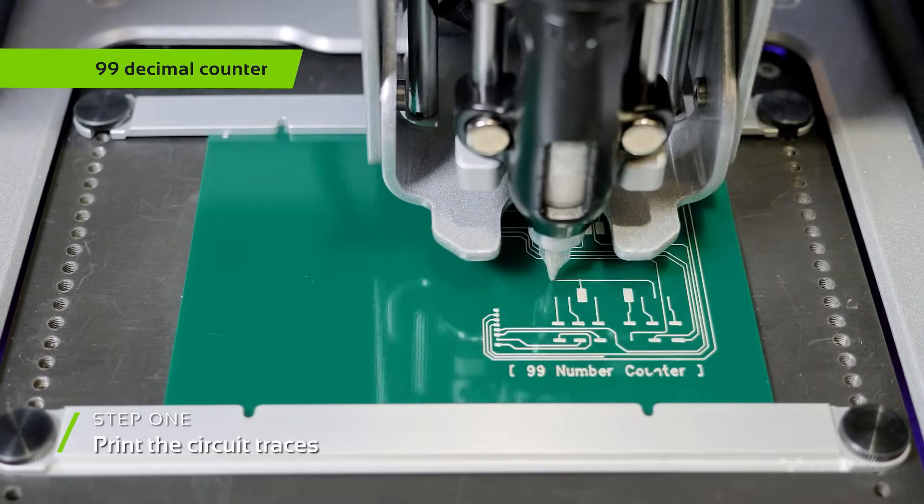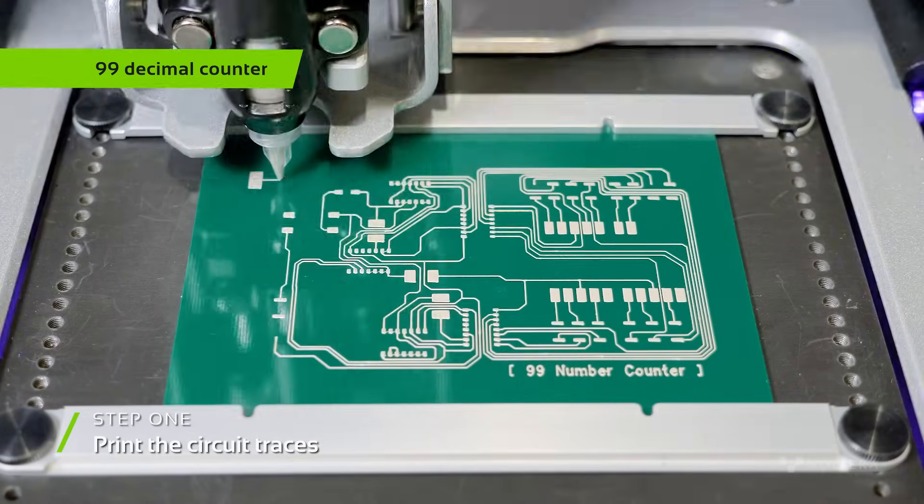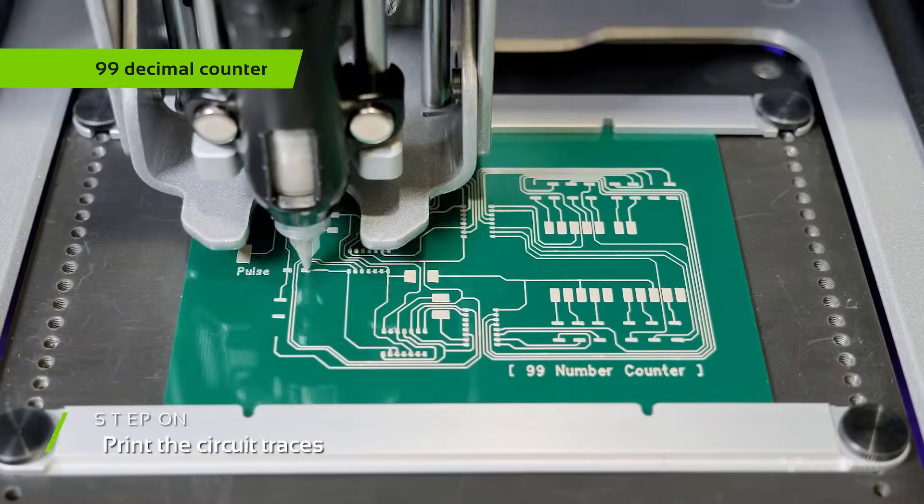The third board teaches students how the various components of the circuit work together to allow the seven-segment display to count up to 99.